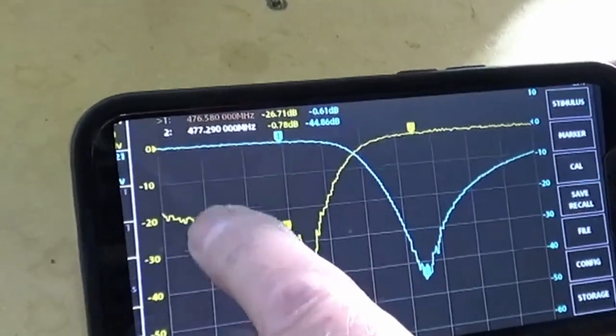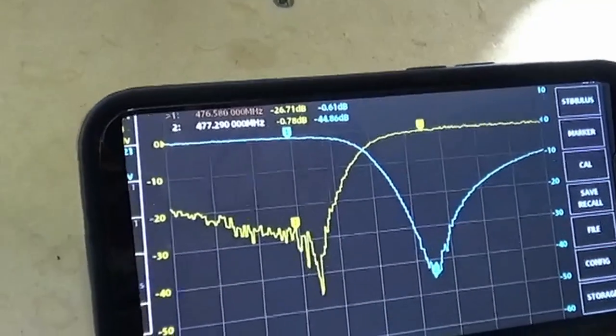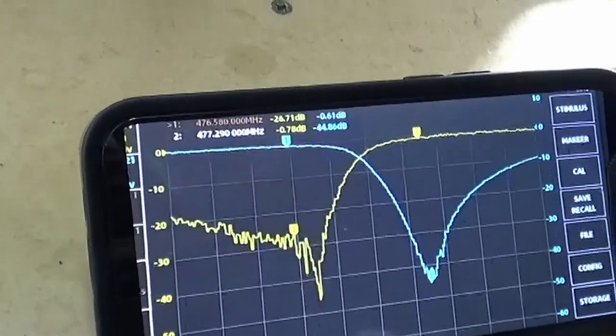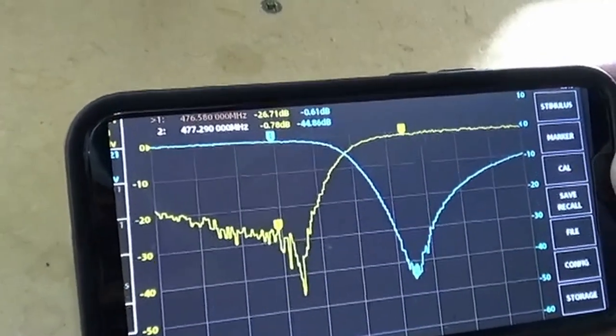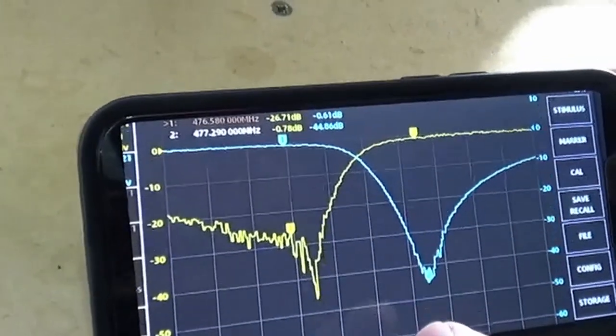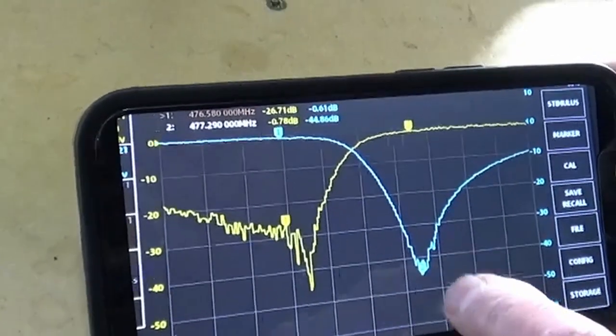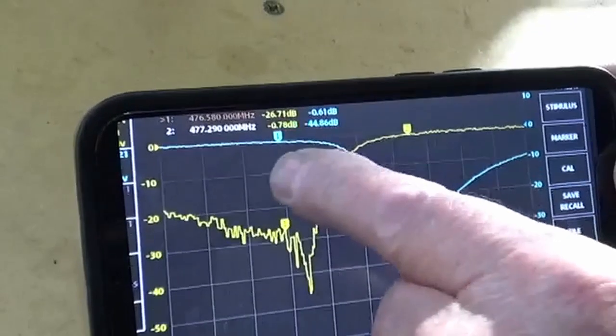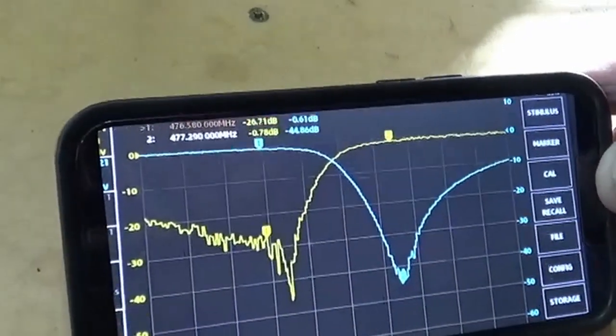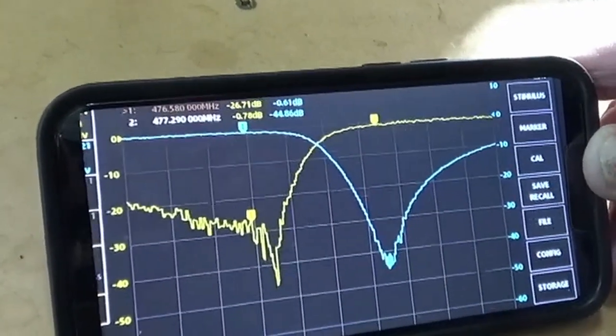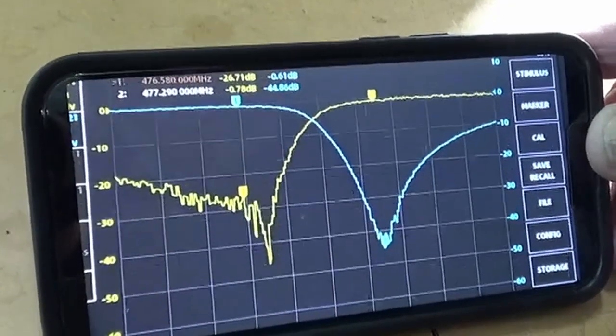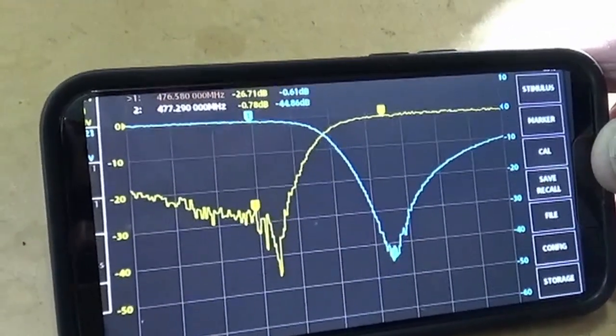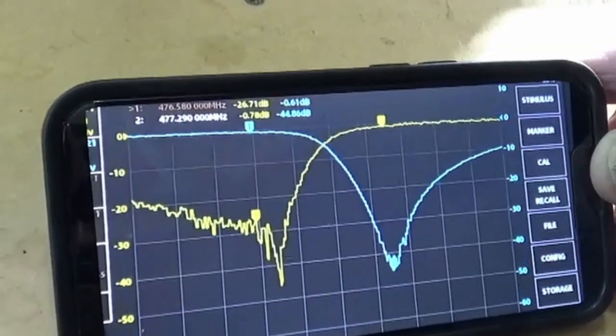Minimum return loss that I'd be happy with would be 14 dB return loss, which equates to an SWR of 1.5. But what we've got there is pretty good, and you can see the markers are actually our repeater input and repeater output frequencies, so for practical purposes, that's not too bad, and of course when it's finally adjusted and aligned, we can actually get them a little bit better than that.